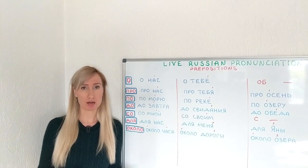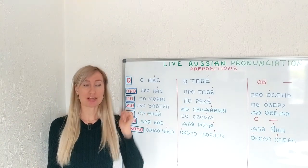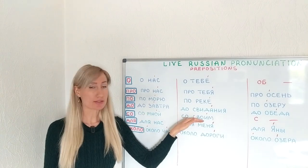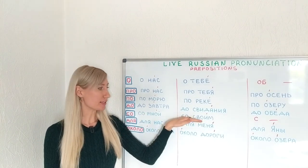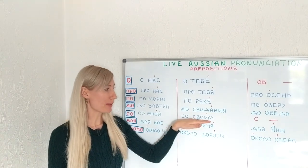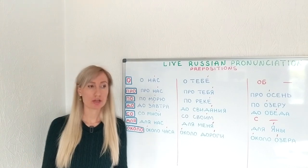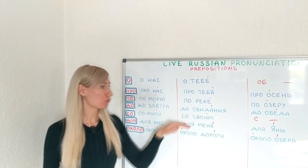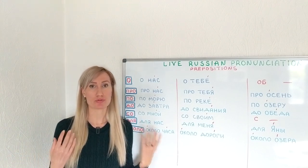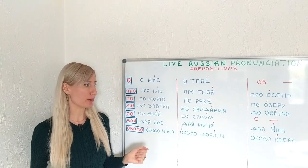For example, СО СТРАХОМ — with fear. Let's listen how it sounds: СО МНОЙ, СО СВОИМ — meaning 'with his own' or 'her own.' СВОЙ means someone's own. СО СВОИМ ДРУГОМ — with my own friend, or her own friend or his own friend.